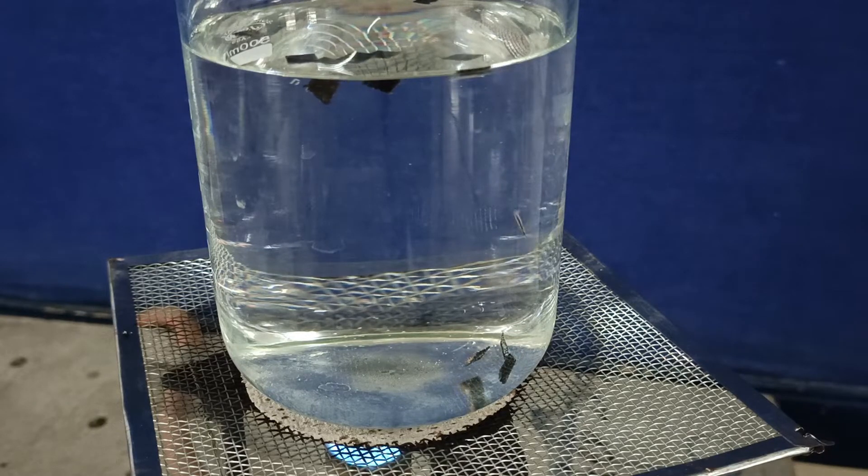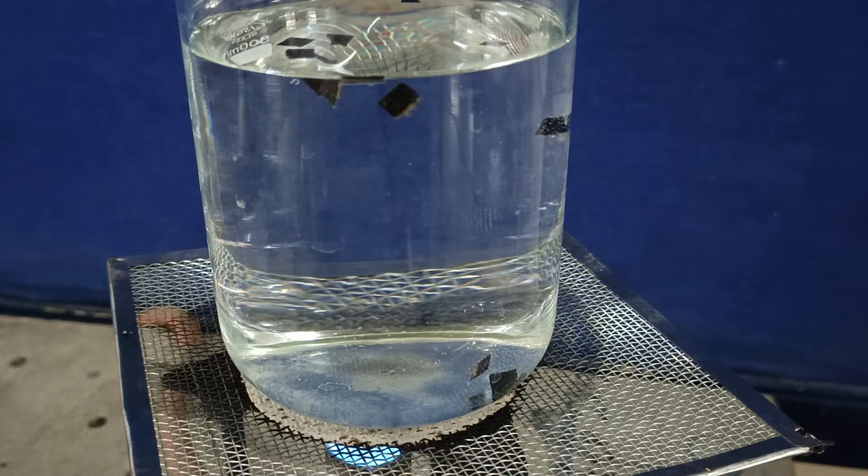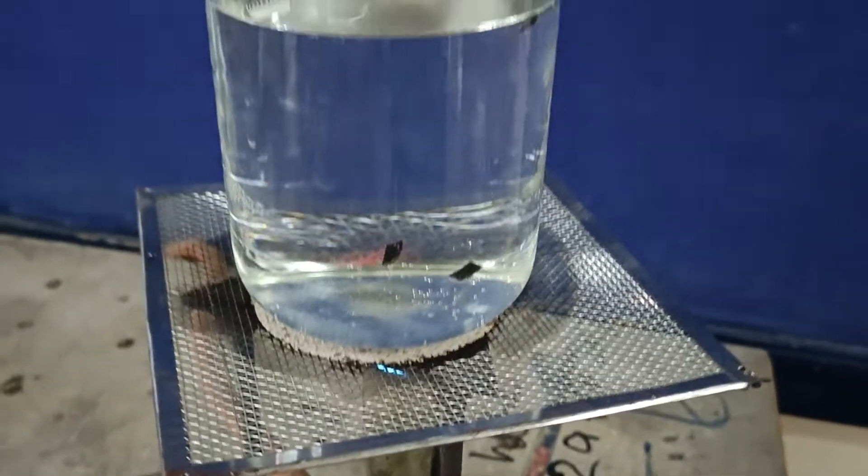The hot water at the top after some time cools down. Volume decreases, density increases, due to which it comes down along with the pieces of paper.